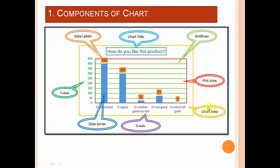Now we have two terms: plot area and chart area. We can see a yellow color boundary here. This boundary indicates the area that is covered by the chart — it includes the chart title and labels for both the x-axis and y-axis. This whole area occupied by the chart is called the chart area. The red area, which is bounded by the x-axis and y-axis, is called the plot area. We can say that the plot area is a part of the chart area — in other words, the plot area is inside the chart area.